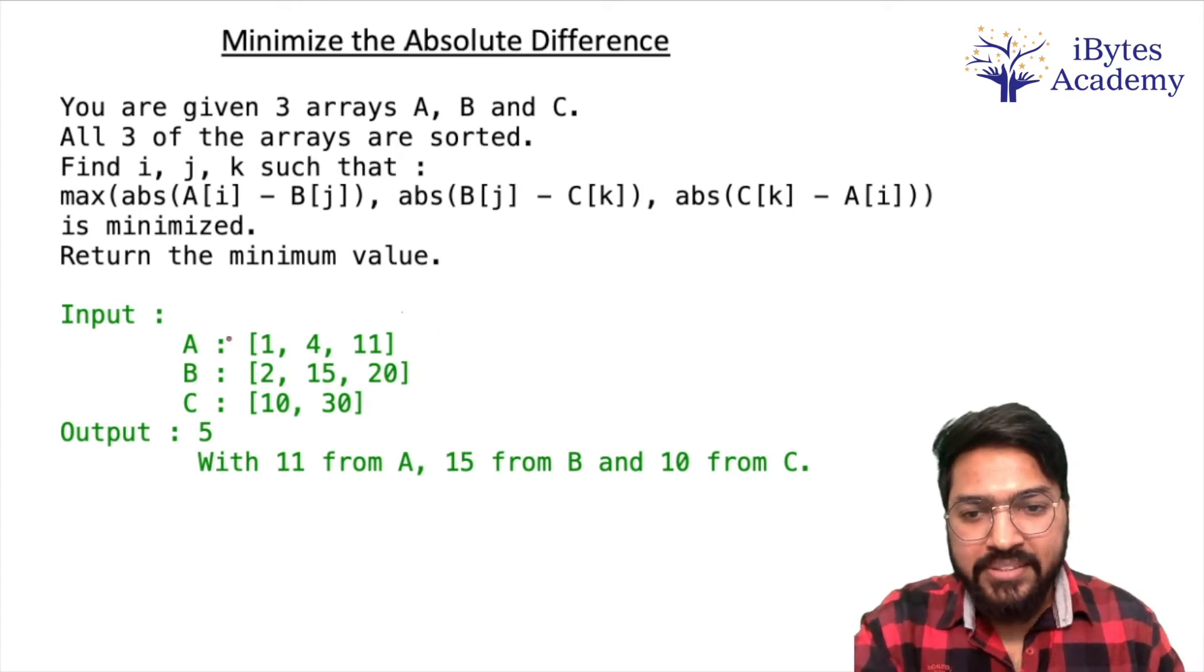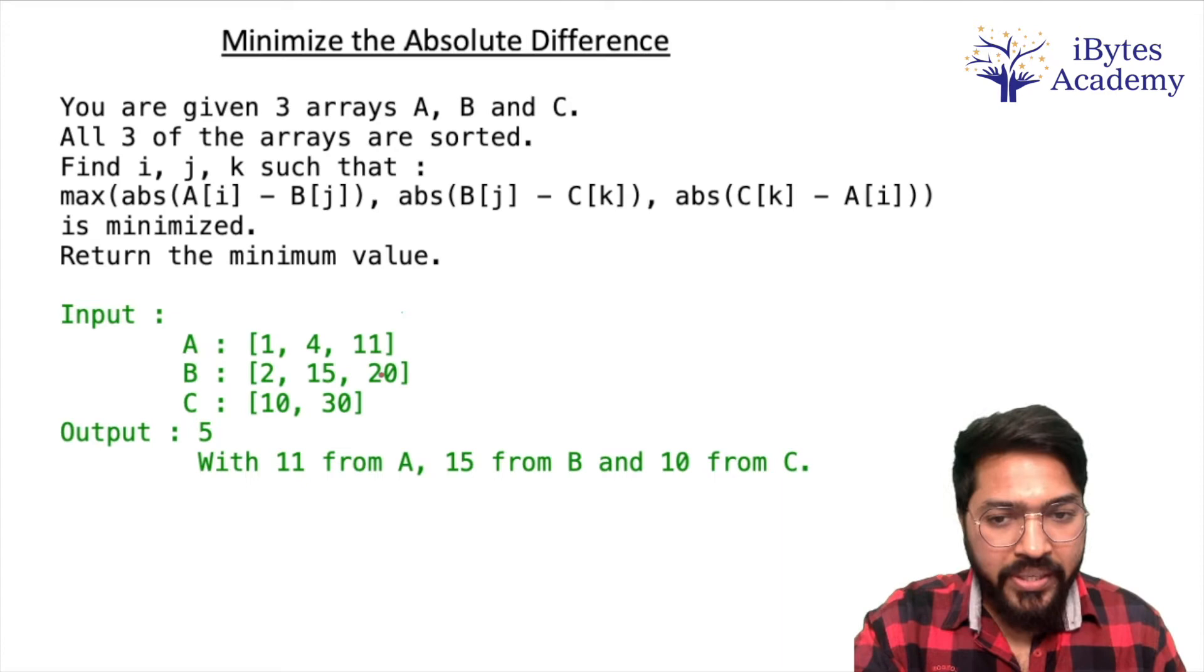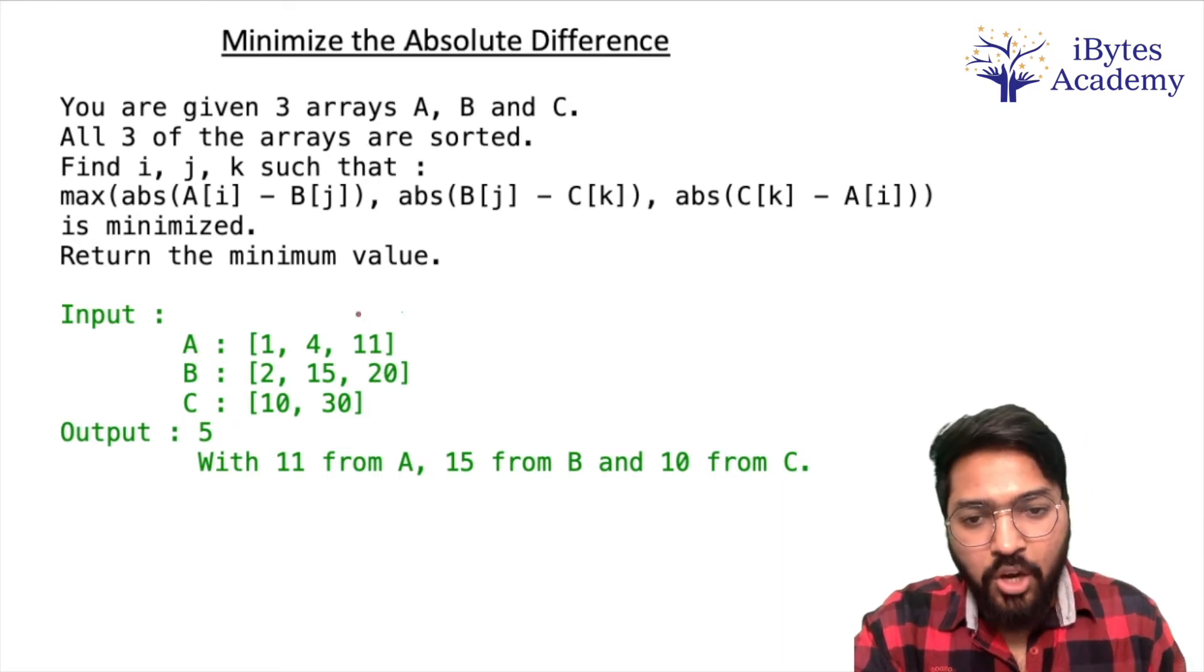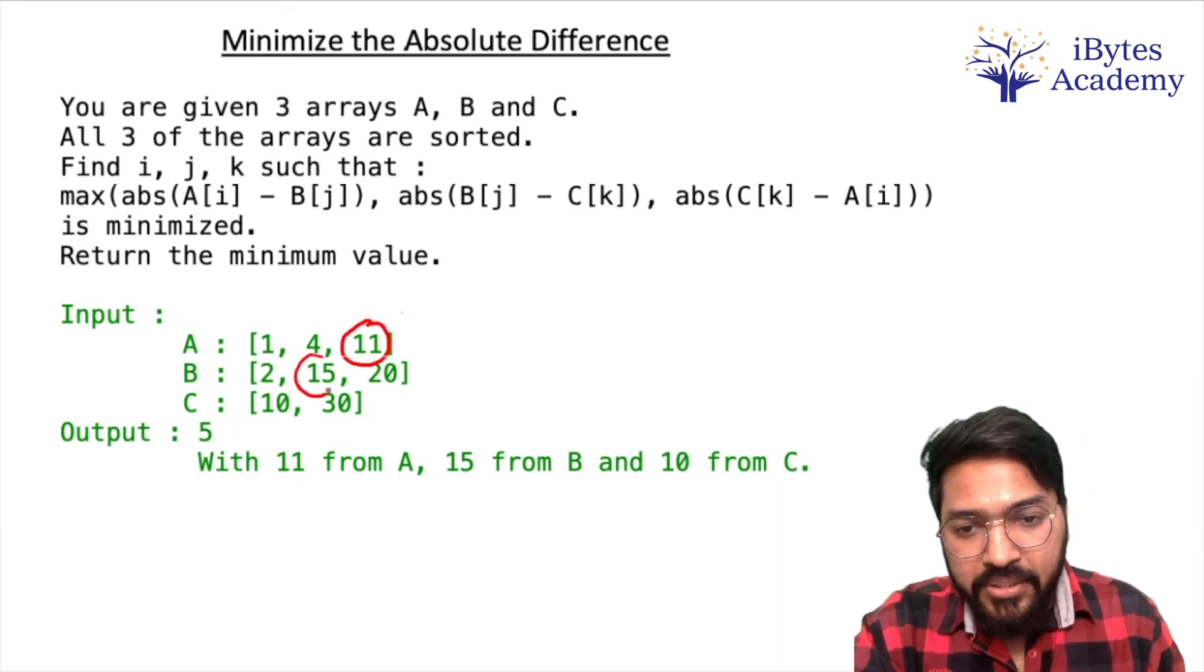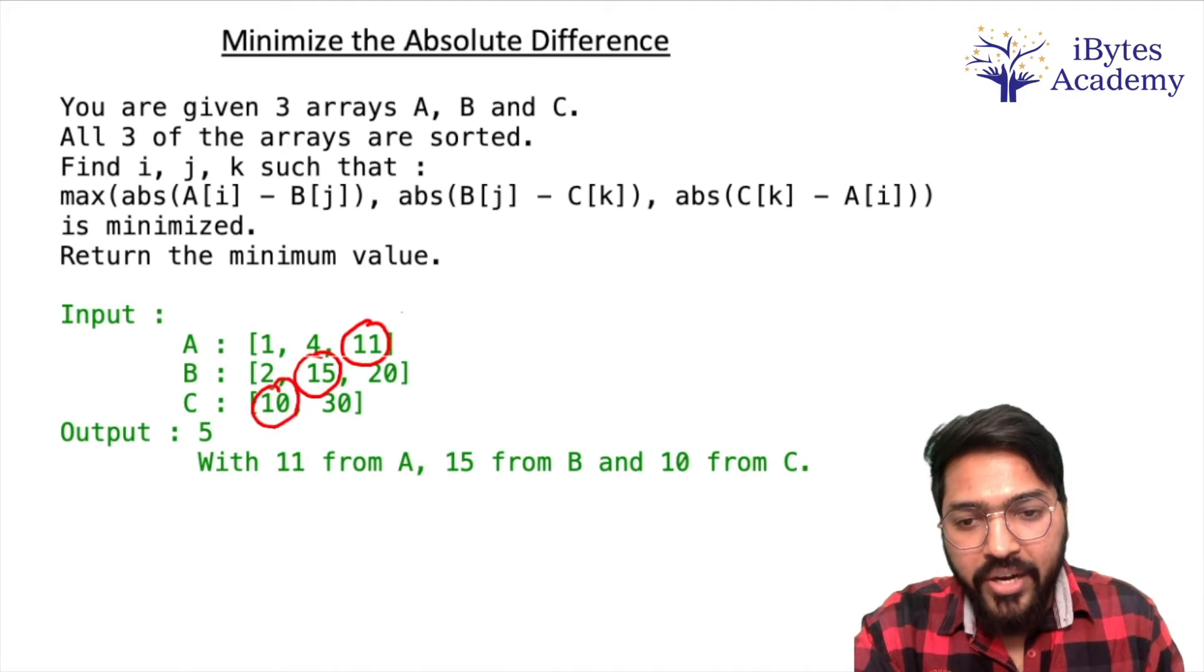Let's look at these three numbers. In the example you can see that we have first array [1, 4, 11], second array [2, 15, 20], and third array [10, 30].